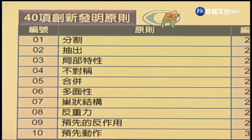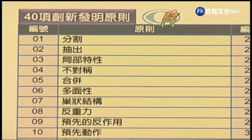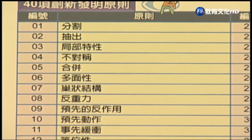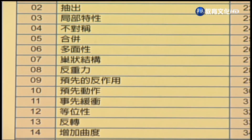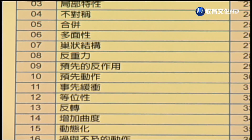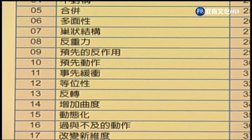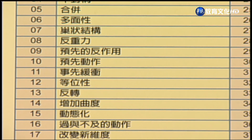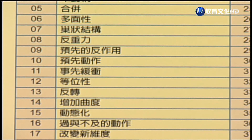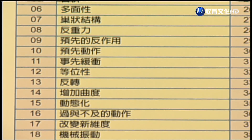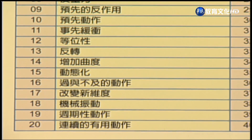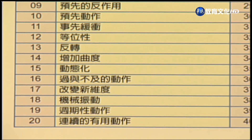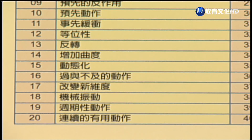40项创新发明原则如下：1.分割、2.抽出、3.局部特性、4.不对称、5.合并、6.多面性、7.潮状结构、8.反重力、9.预先的反作用、10.预先动作、11.事先缓冲、12.等位性、13.反转、14.增加曲度、15.动态化。